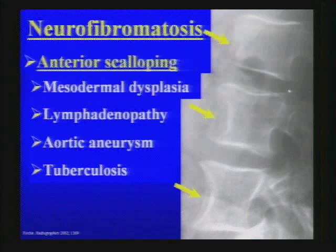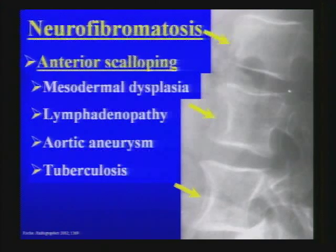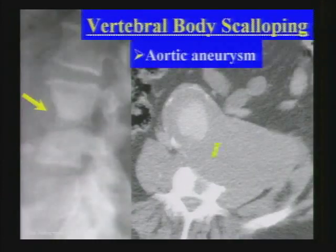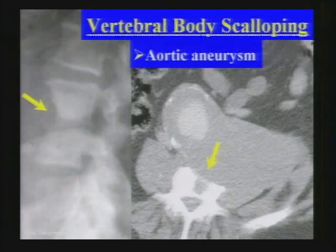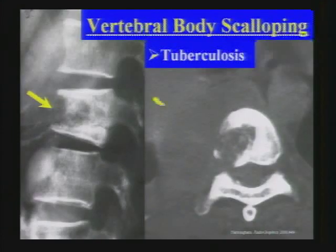Neurofibromatosis can also cause anterior vertebral body scalloping, as can other mesodermal dysplasias, lymphadenopathy, aortic aneurysm, and TB. An aortic aneurysm can be associated with vertebral body scalloping. Tuberculosis can also cause erosions of the vertebral body.